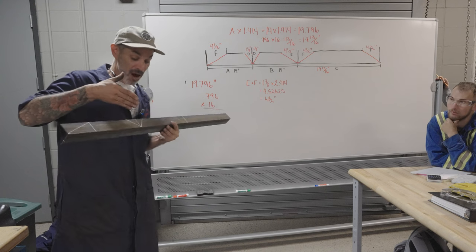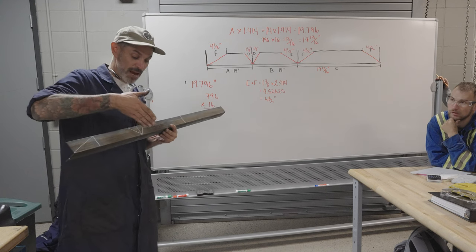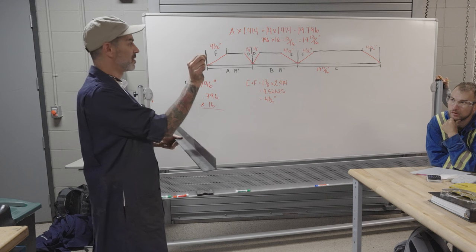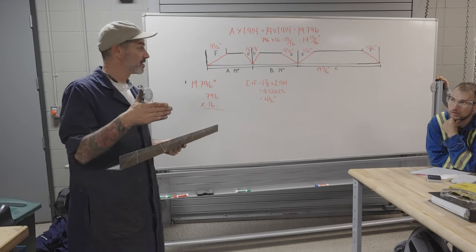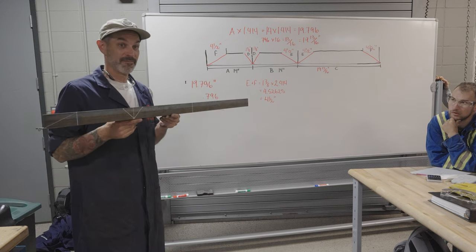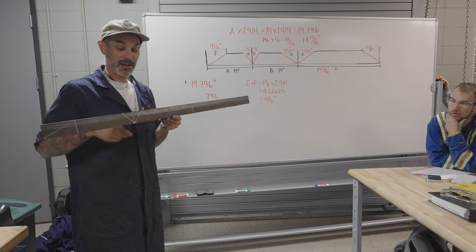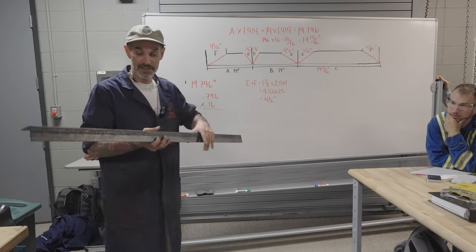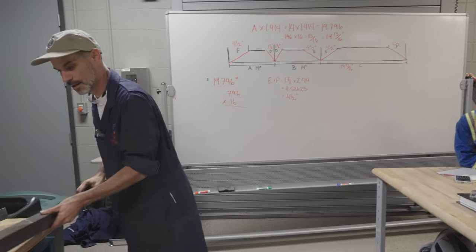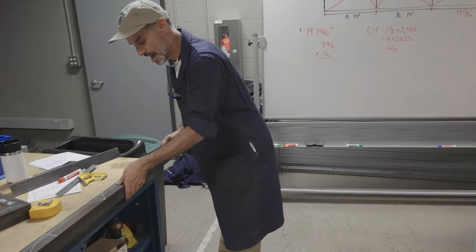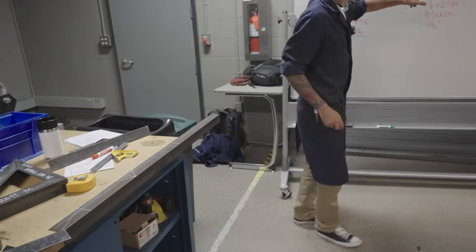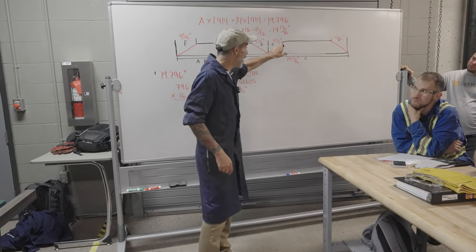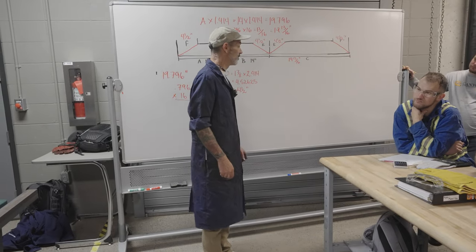If you decide not to stop at the eighth-of-an-inch mark, you'll cut right into the wall of the angle iron. You'll have a little space at the bottom, and when you fold and bend it, it's not going to work — you'll have a really large gap between your two pieces. Next, we're going to do four and a half inches off that mark, and four and a half inches off of this mark on the other side.